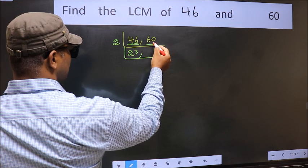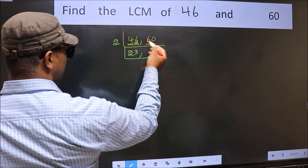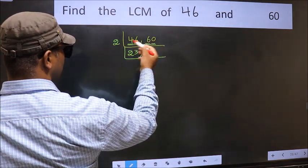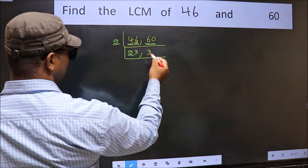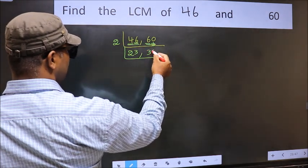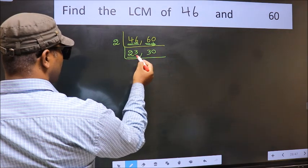Now the other number 60, last digit 0, so this is divisible by 2. First number 6, when do we get 6 in 2 table? 2 times 3 is 6. This 0 as it is down. Now here we have 23.